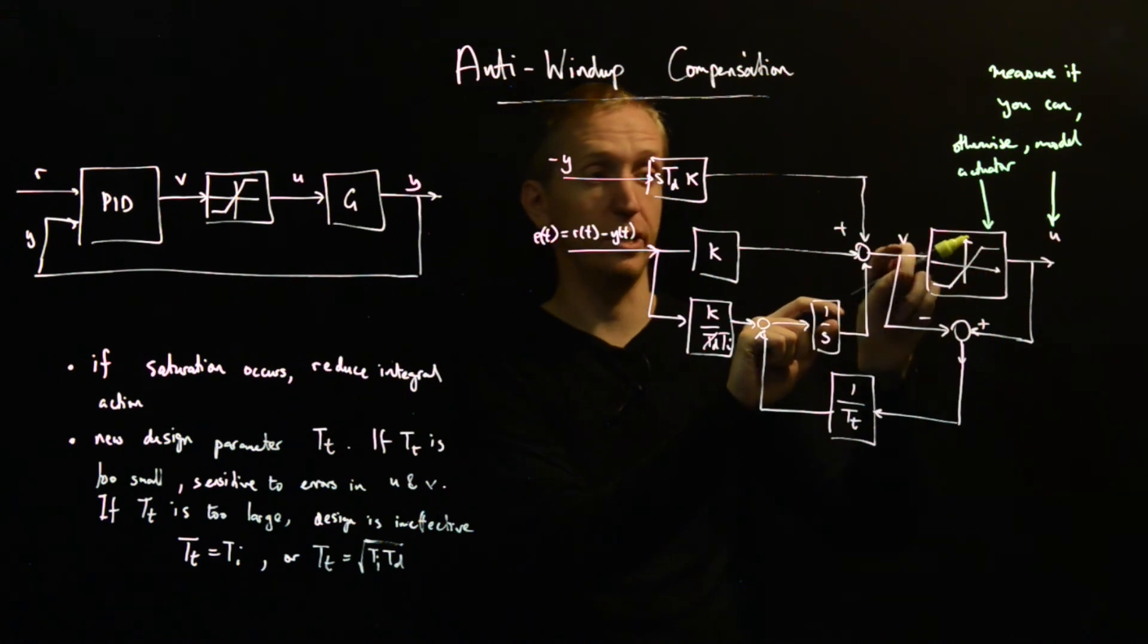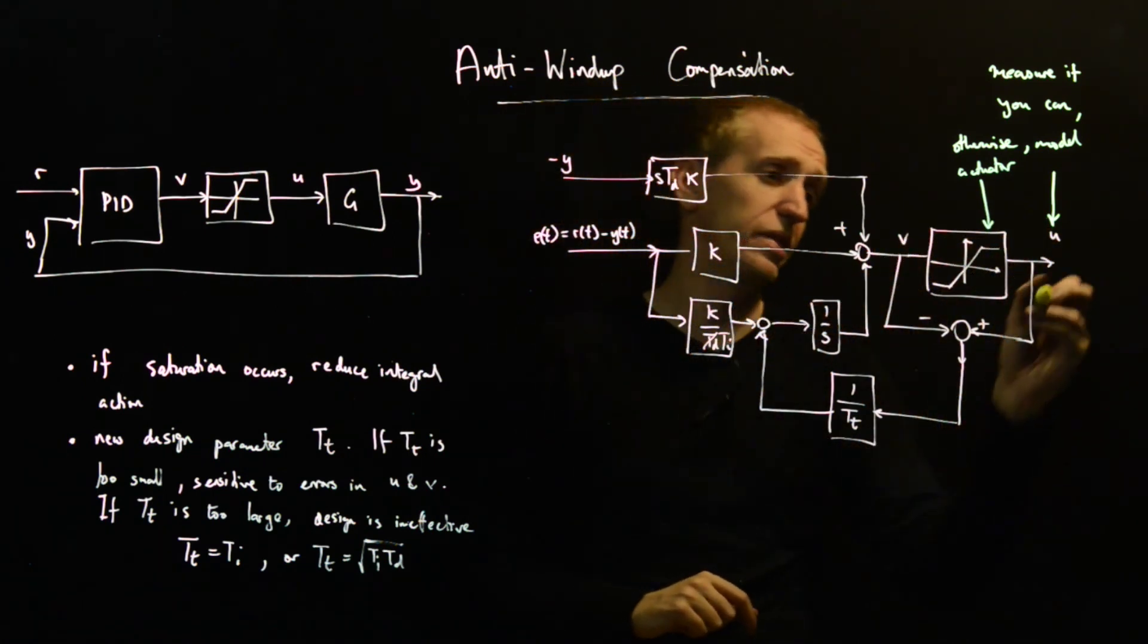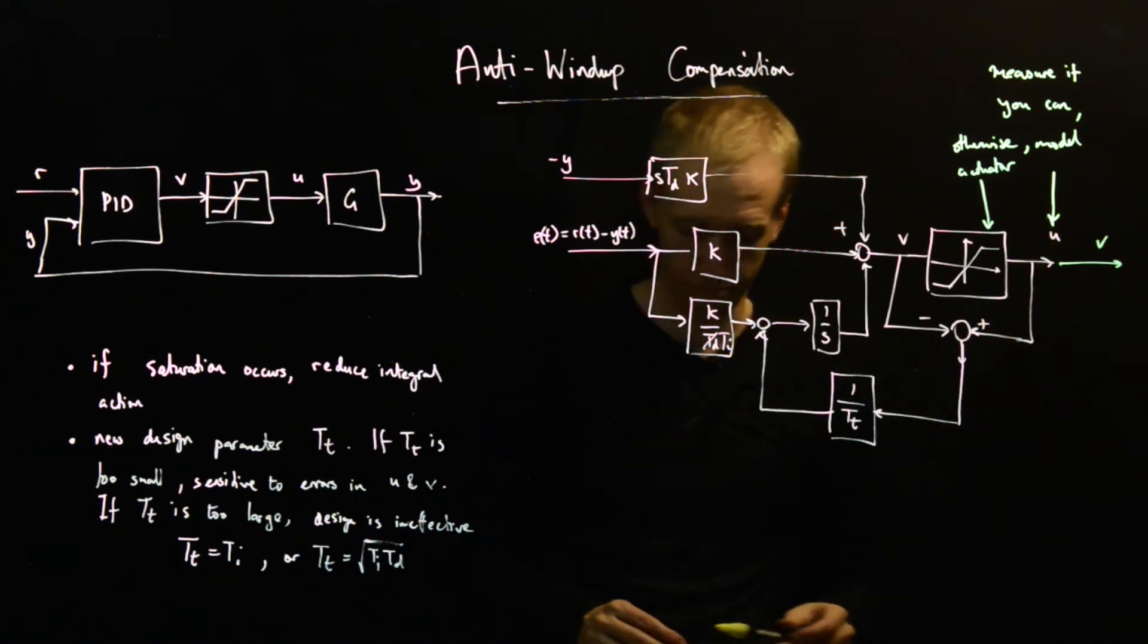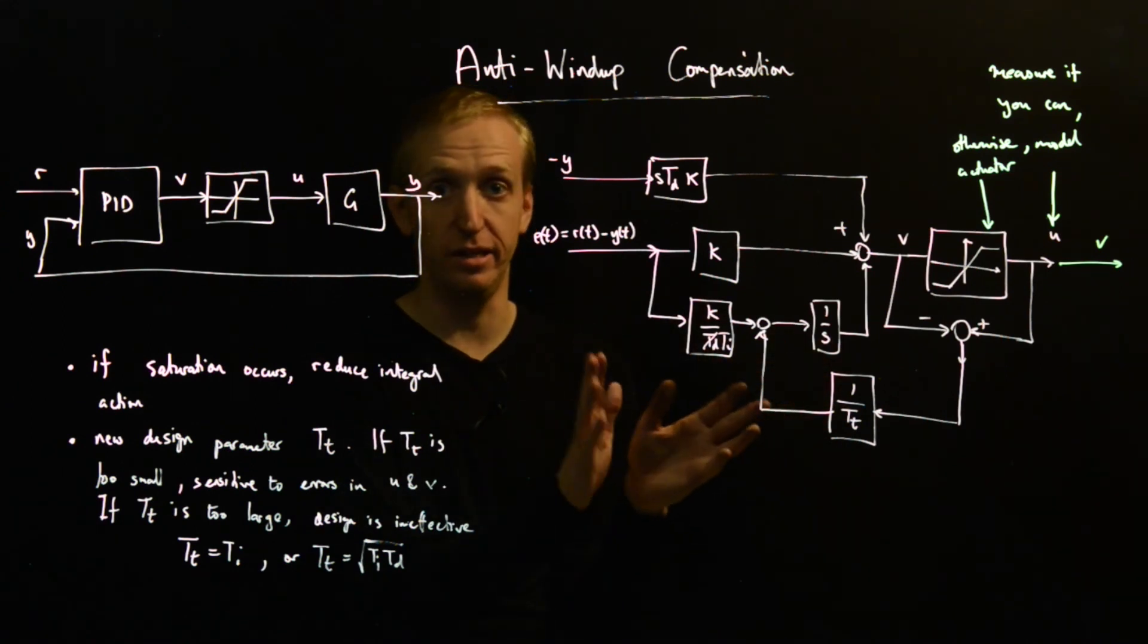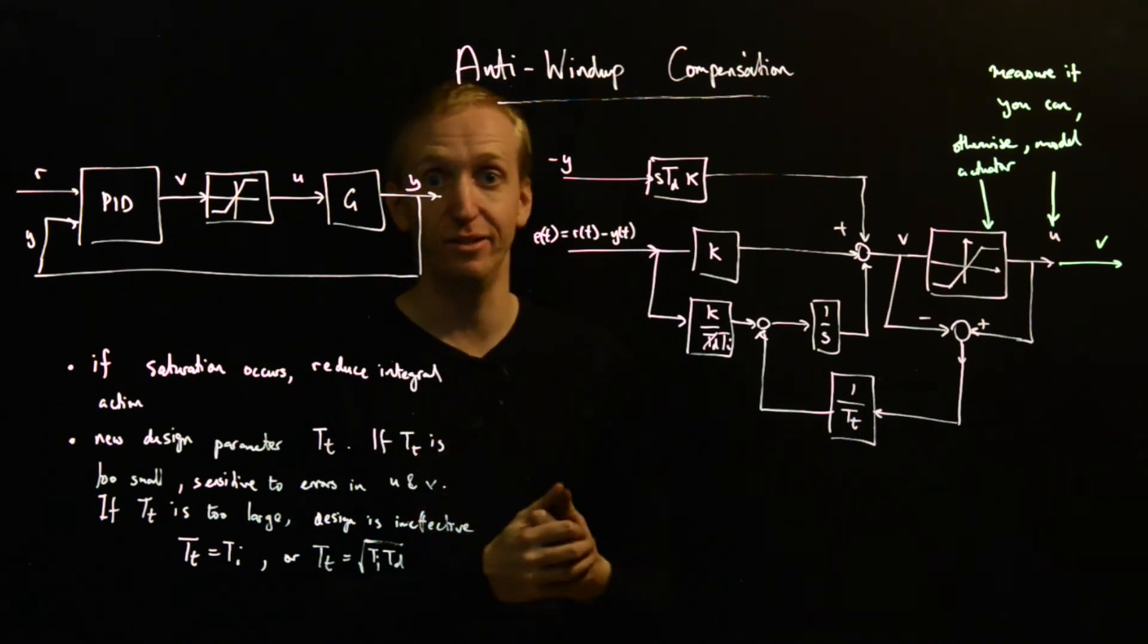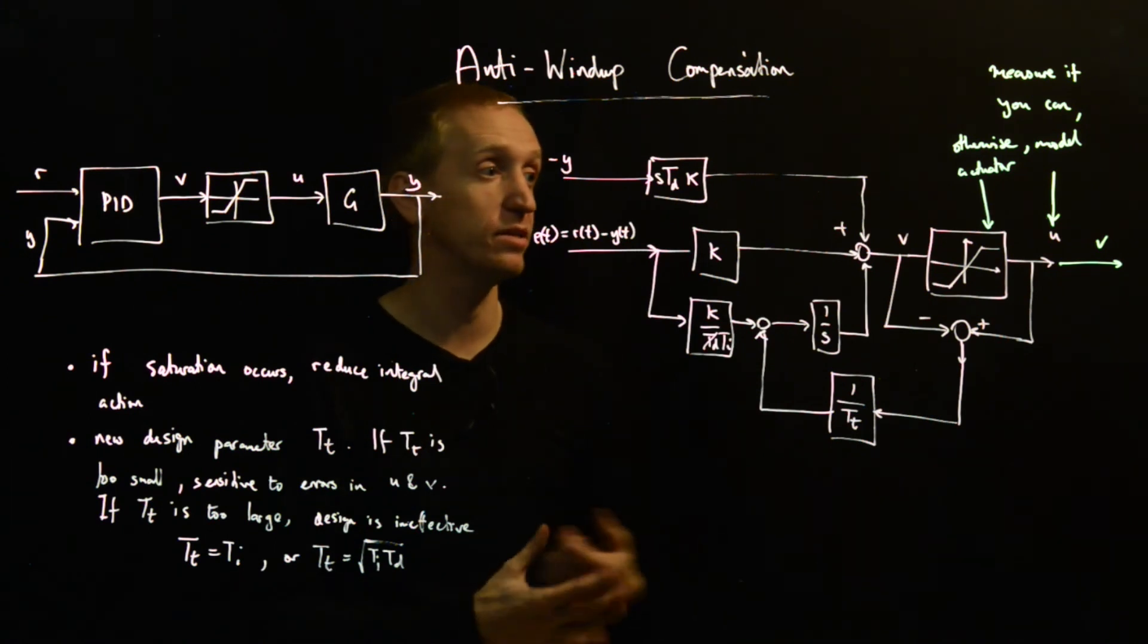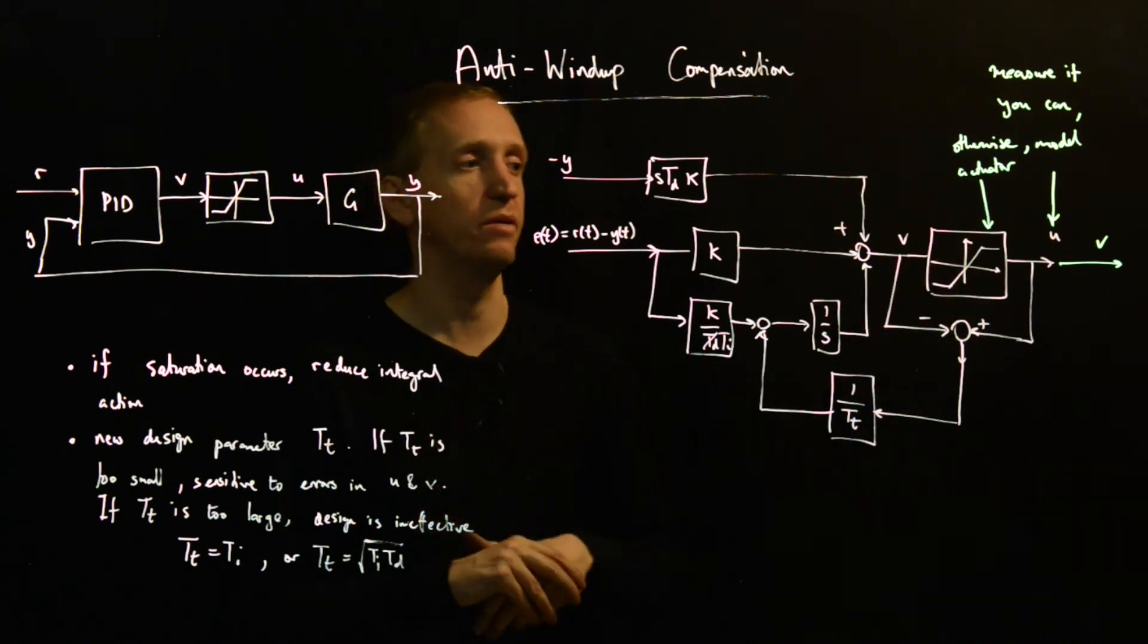Otherwise, you just model actuator. So that means that you put a model for your actuator in here. So rather than taking measurements, you just try and model what's going in. You know what this is, so you can model what you will be. And then you just use this as your new input to your system. So how you implement things will change very slightly depending on whether or not it's possible to measure the output from your actuator. If you can, you should always do that. You shouldn't prefer a model to a real measurement. But maybe that's not available, and if it's not available, here's a little fix that you can do.